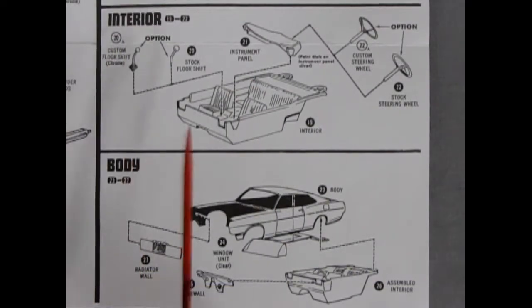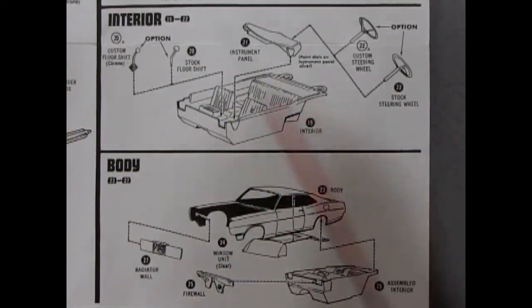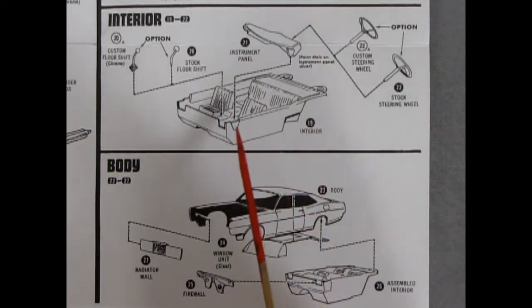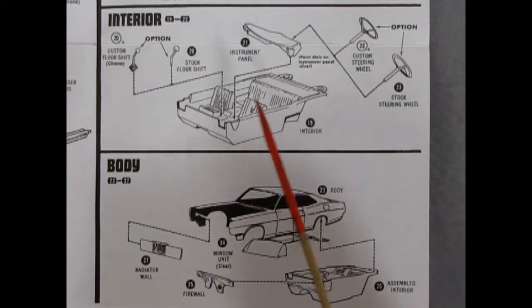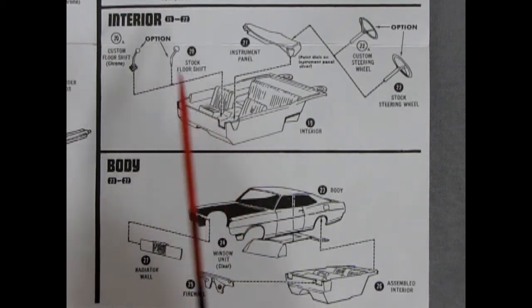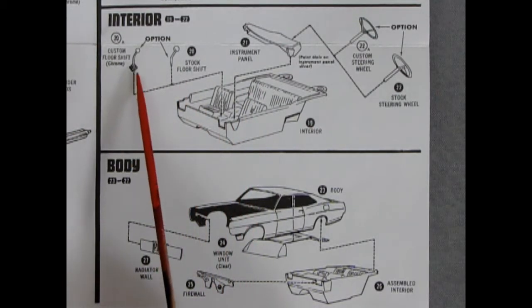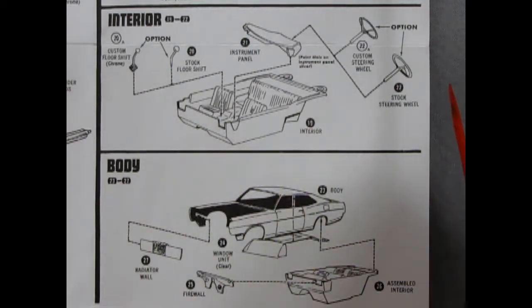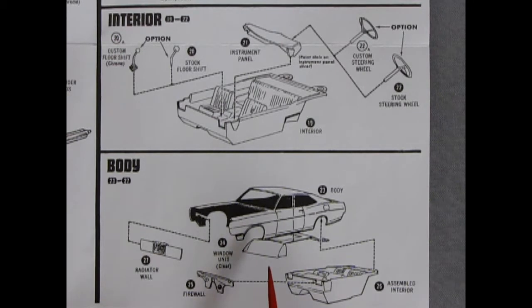Here we're going to just look at the interior and the body. Both these little segments here together. So, we have our interior tub molded as one piece which is typical for a kit made in 69. A stock floor shift which will pop in there. Or the optional custom floor shift with a little rubber booty down there. The dashboard. And then we have the option of the custom steering wheel or the stock steering wheel. I do believe the stock steering wheel has a horn ring in it. And then looking at our one piece body, we've got the one piece glass going into a pretty much one piece interior with a one piece firewall gluing on the front. And our radiator wall.